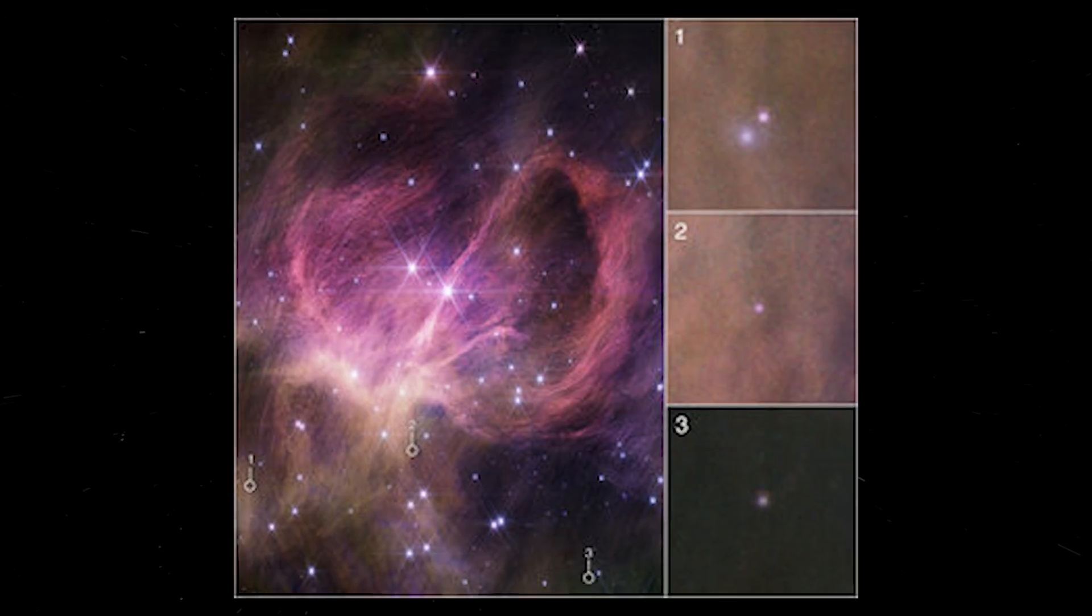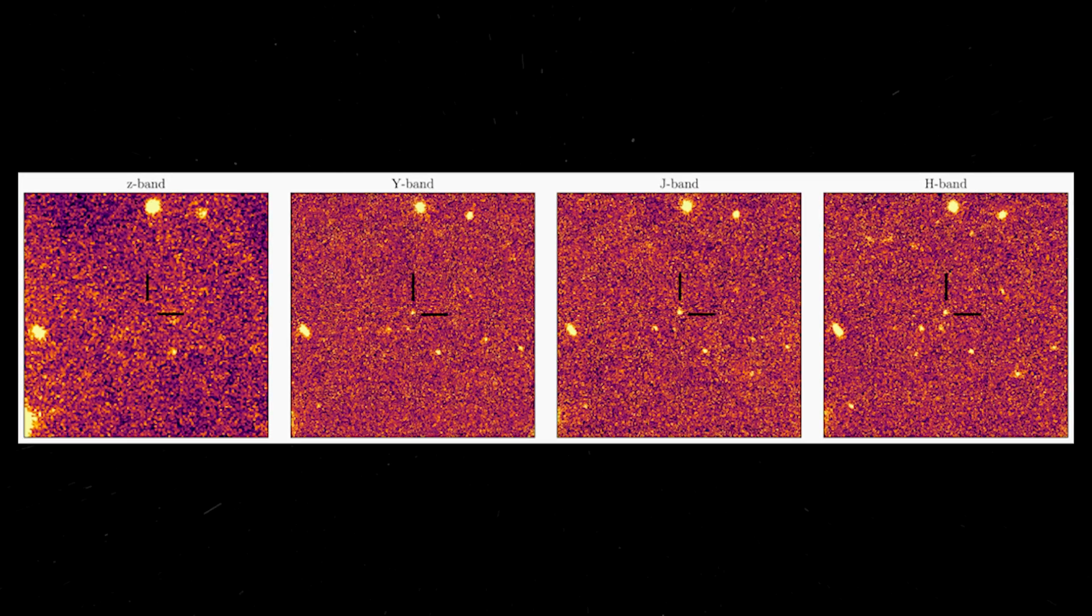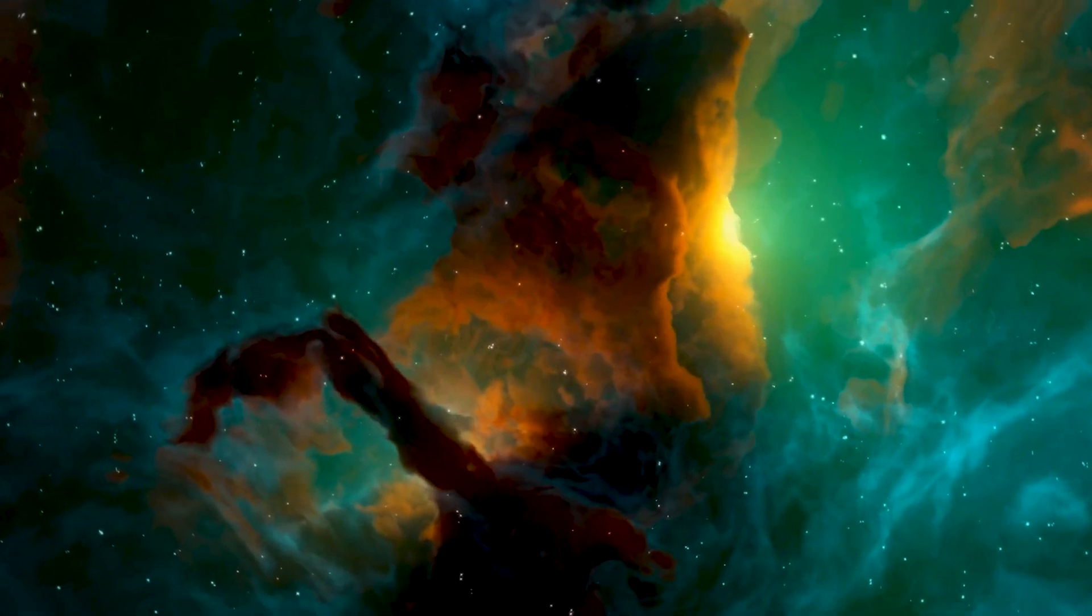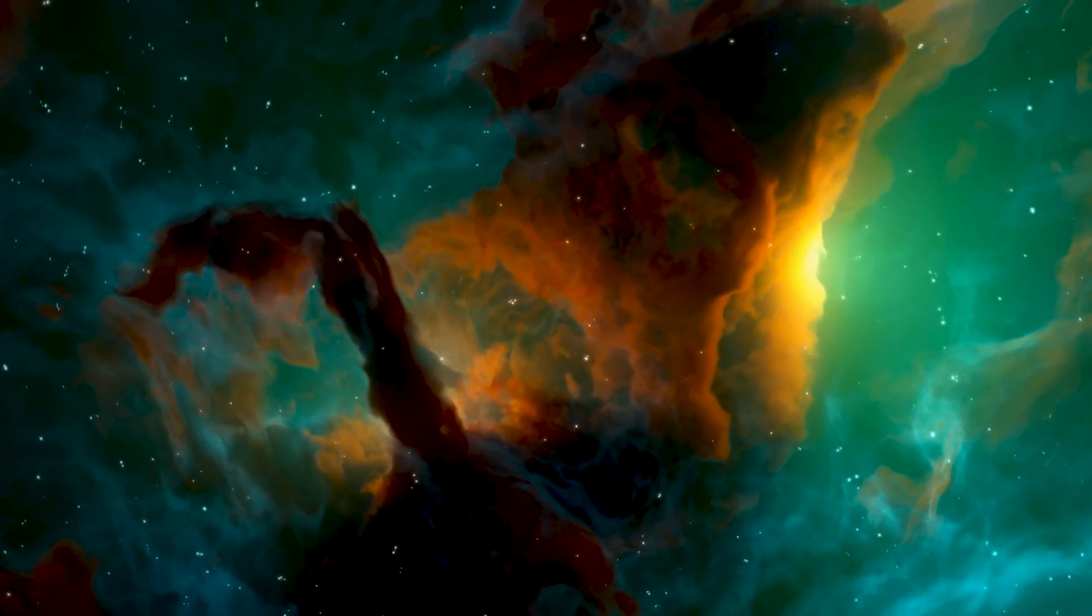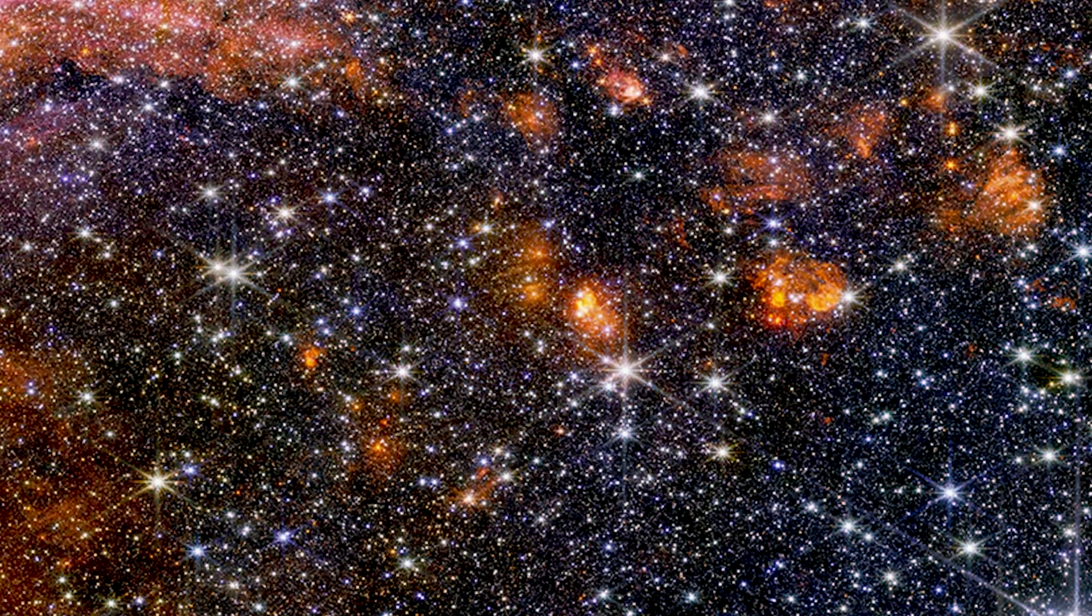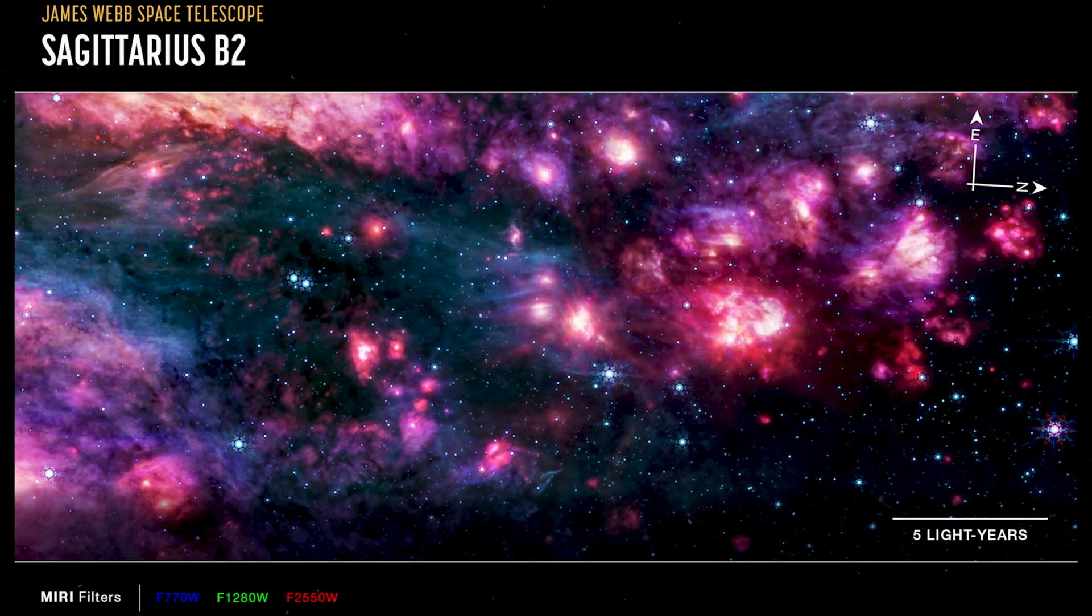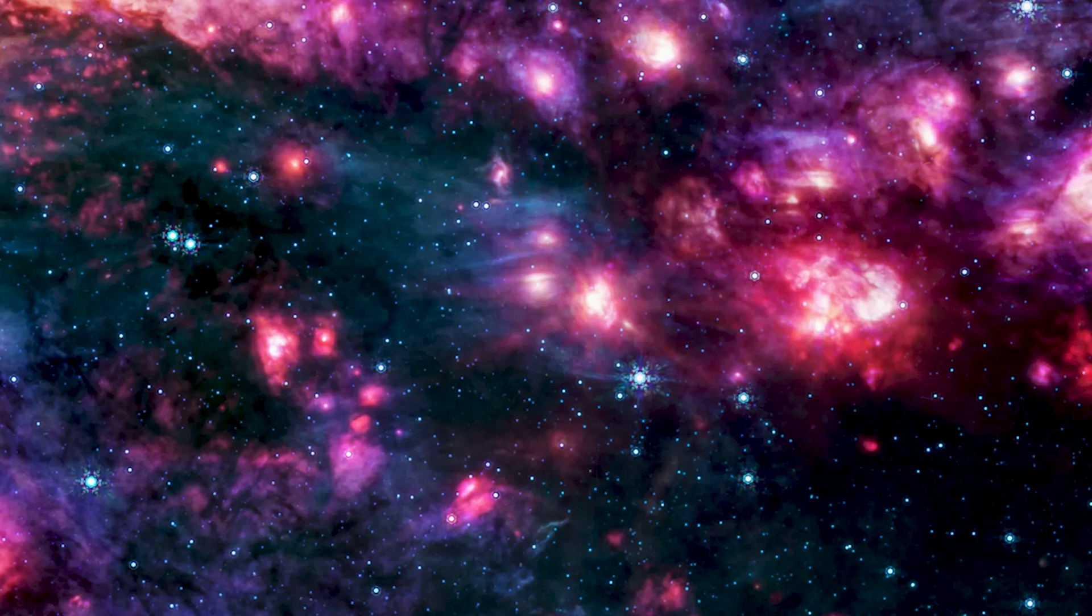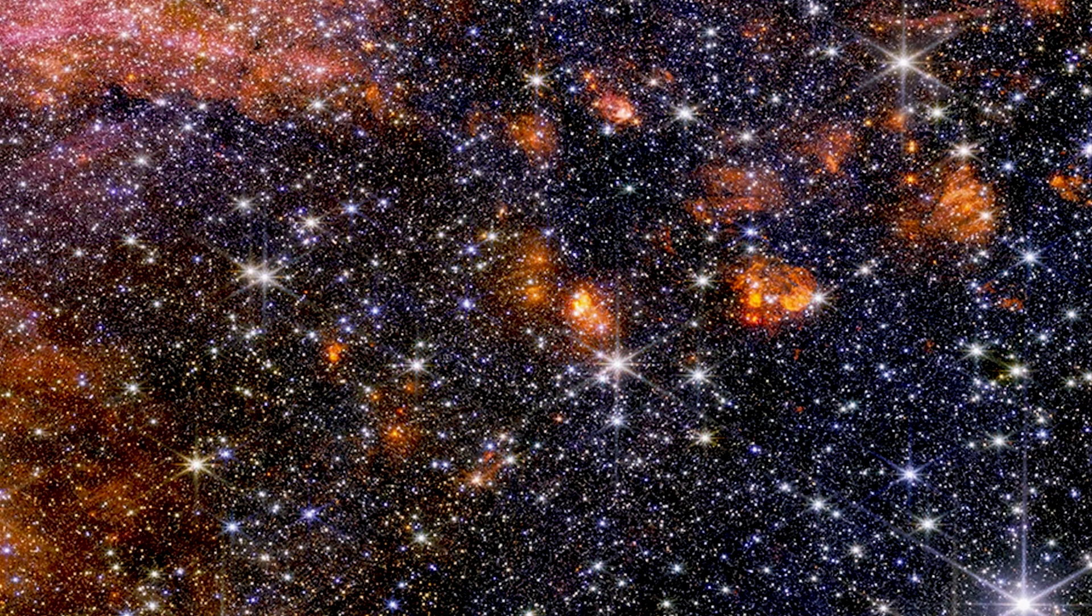Even in the early universe, stars lived fast, died violently, and seeded space with heavy elements. The same cycle we see today was already underway. Creation and destruction side by side. And deep in the Milky Way's core, Webb peers into the Sagittarius B2 molecular cloud, a vast reservoir of gas and dust forging new stars in near darkness. It's a place of beginnings, yet every star born there is already on a clock.